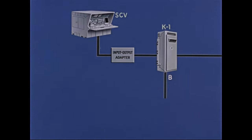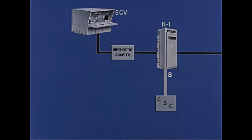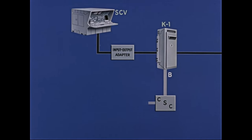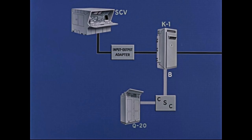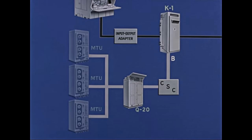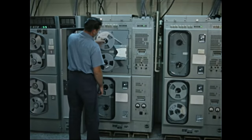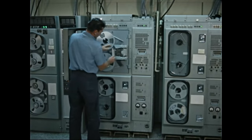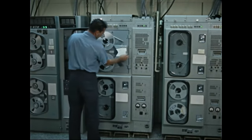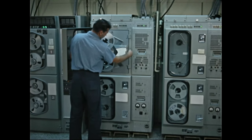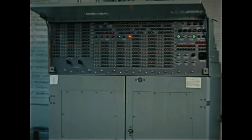Channel B in the K-1 connects through the control signal converter, CSC for short, to the AN-USQ-20 computer, known as the Q20. The Q20 is connected in turn to the magnetic tape units, or MTUs. The MTUs are auxiliary memory equipment that allow more programs to be used in the system through their linkage with the Q20 computer.